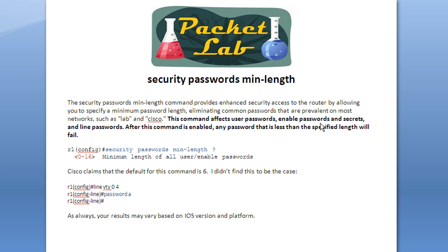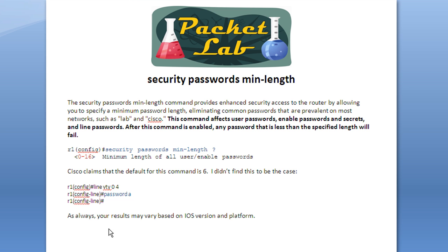The command affects user passwords, enable passwords and secrets, and line passwords. After this command is enabled, any password less than the specified length will fail. From the CLI, you type 'security passwords min-length' and IOS help shows you can set a minimum from 0 (no minimum) up to 16. Cisco's documentation claims the default is 6, but that wasn't found to be the case in testing — a single-character telnet password of 'A' was accepted, suggesting no minimum by default. Your results may vary based on IOS version and platform.